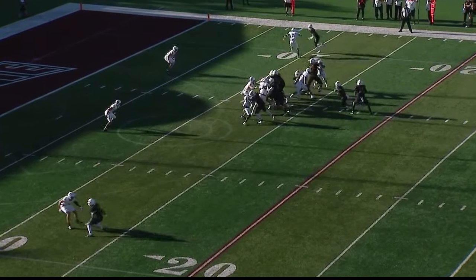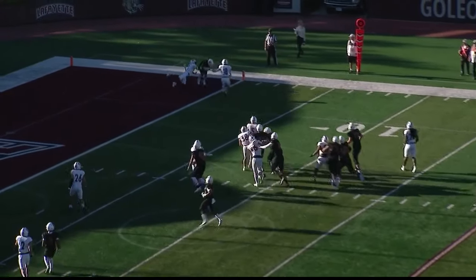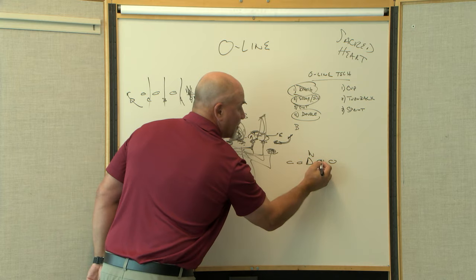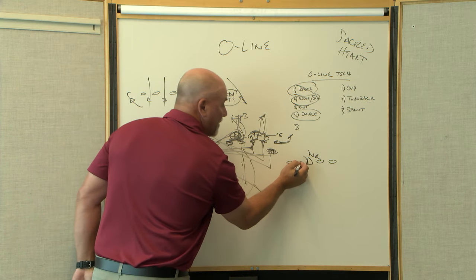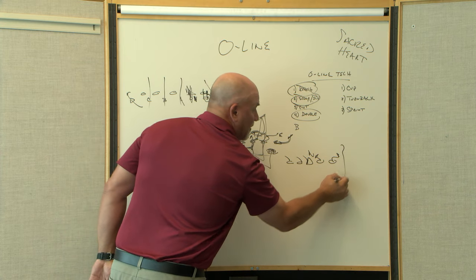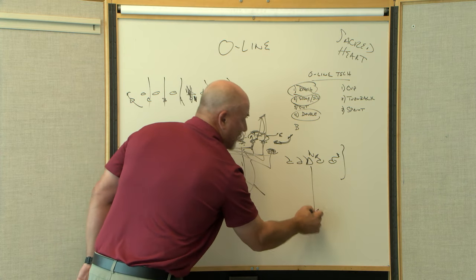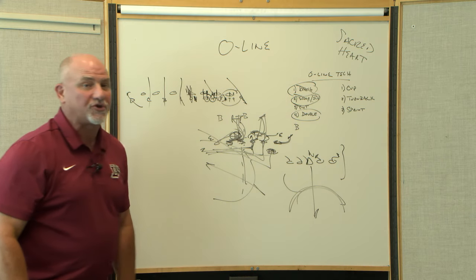When we throw the football, how do we do that? We've got to make sure that we understand cup protections. If we're going to turn back from the first uncovered man, which would be the guard, everybody's turning back here—tackle big on big. So we get a perfect cup protection in here for Ryan Schuster. Easy.